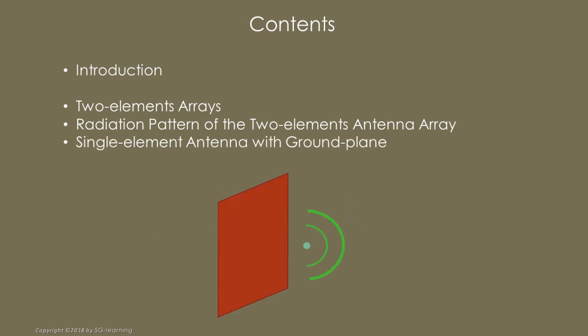We will apply this basic understanding to show that a single antenna with a ground plane may be considered as a simple array. In a further chapter, we will address antenna arrays with an arbitrary number of elements.